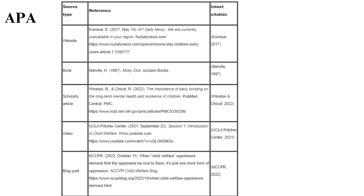APA 7th edition. When writing in APA 7, use these structural guidelines: use double-spaced text with a 1-inch margin on all sides of the 8.5x11-inch paper. The following fonts are acceptable: 12-point Times New Roman, 10-point Calibri, 11-point Arial, 11-point Georgia, and 10-point Lucida Sans Unicode. Use one space after a period and paginate using Arabic numerals.